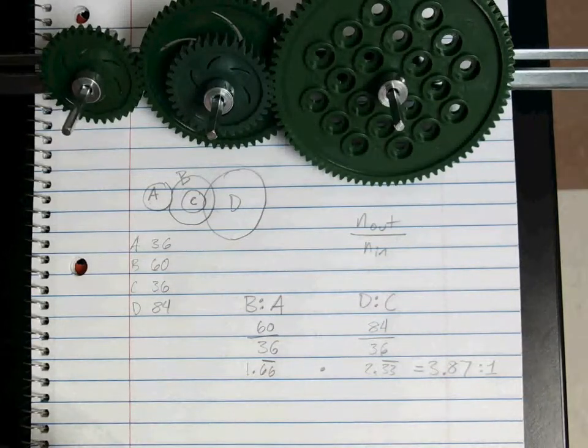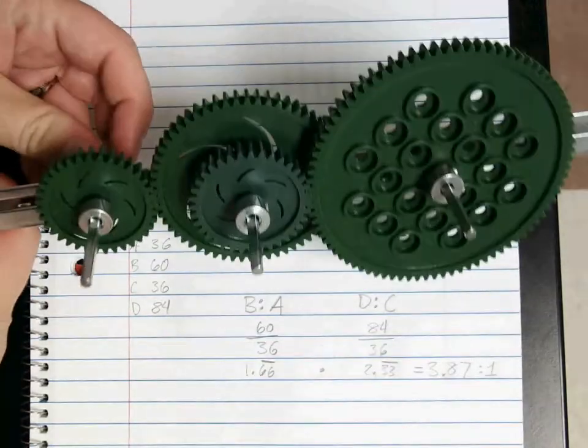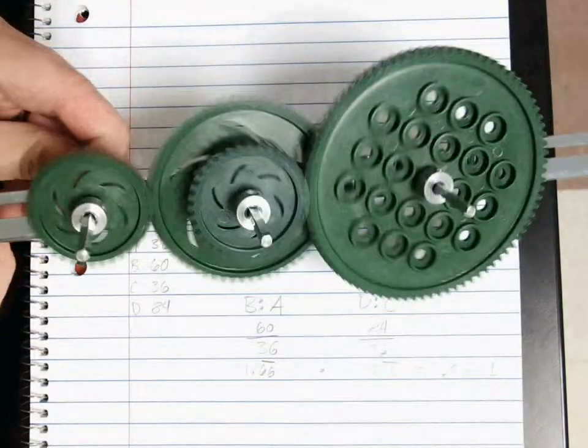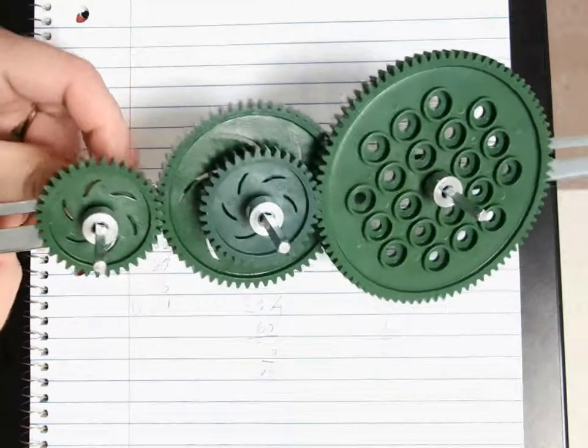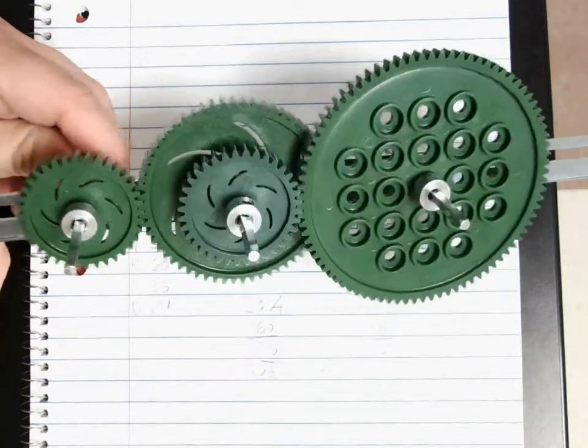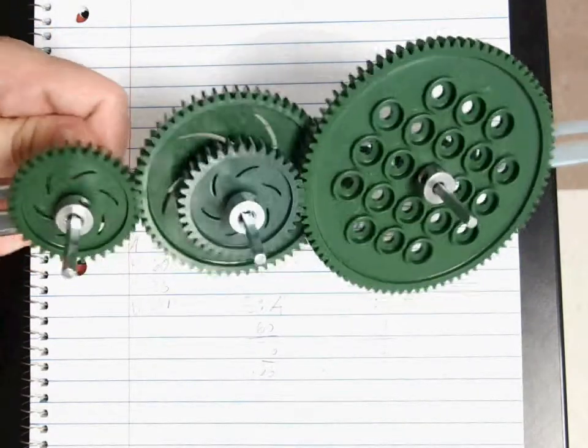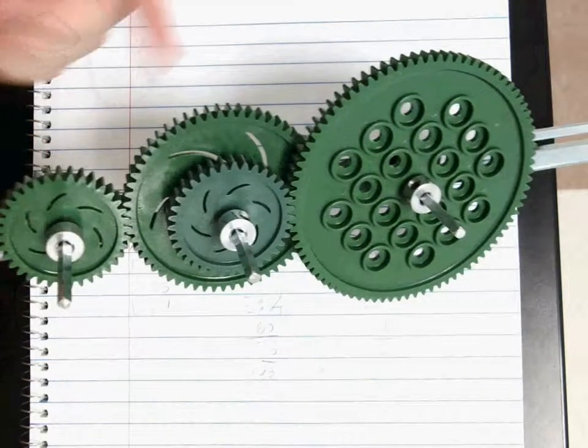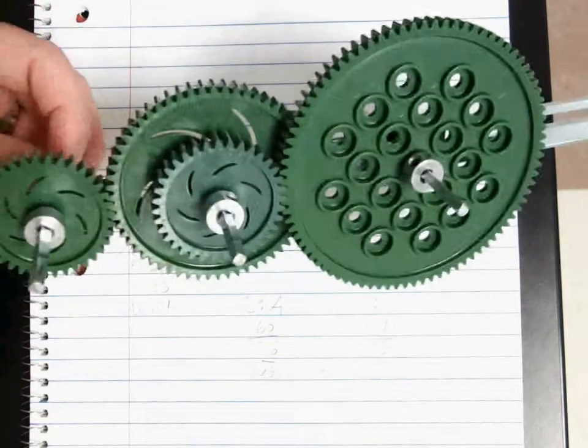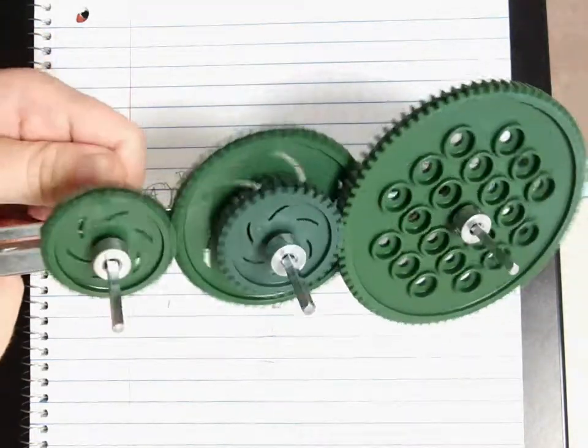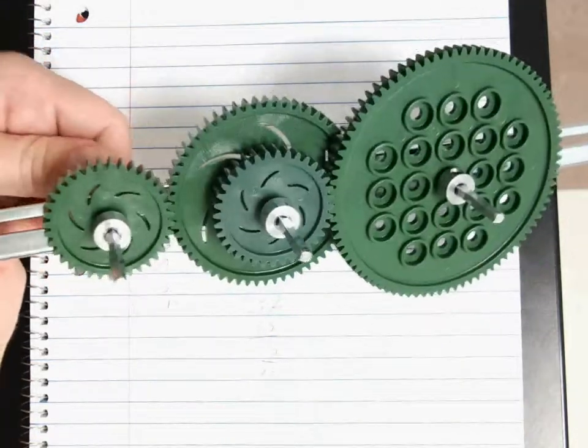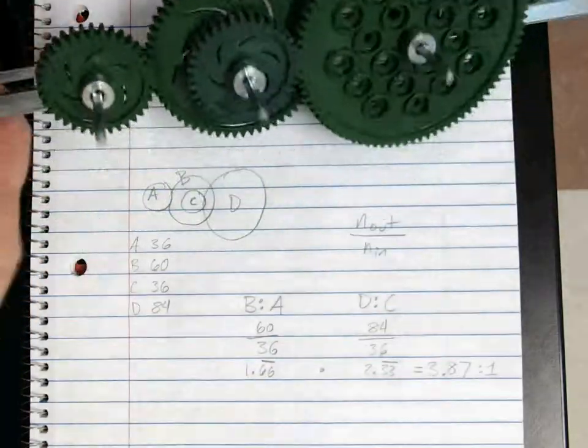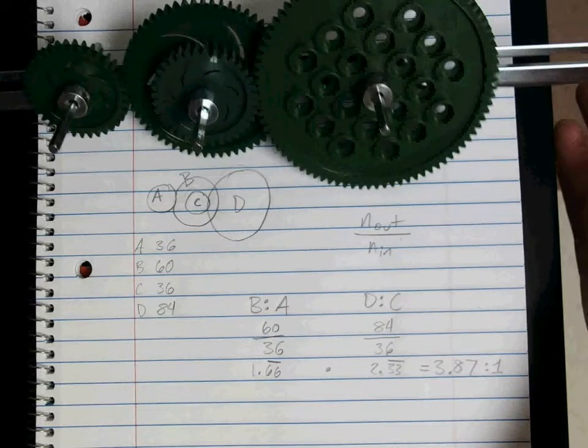So for every 3.8, so almost every four rotations of this little one, this larger one goes around only once. So if you notice, compared to our simple gear ratio, it might have been maybe 2 to 1, or 1 and a half to 1, depending on what gears you used. Your compound gear ratio is going to be much larger, comparatively usually, or much smaller. You can make much larger and much smaller gear ratios by compounding them like this.